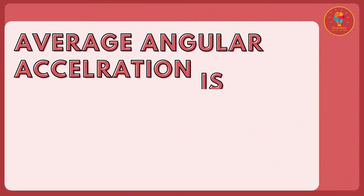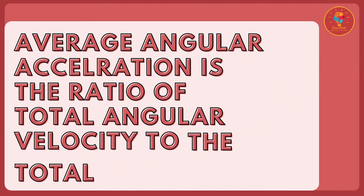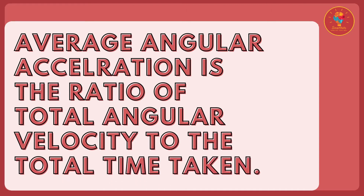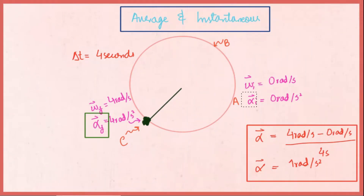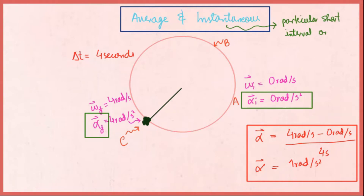Average angular acceleration is the ratio of total change in angular velocity to total time taken, expressed as delta omega over delta t. This value of 1 radian per second squared does not mean the stone has exactly that acceleration at every point; it is averaged over the full 4-second period. The values of 4 and 0 radians per second squared represent instantaneous angular accelerations at particular instances.